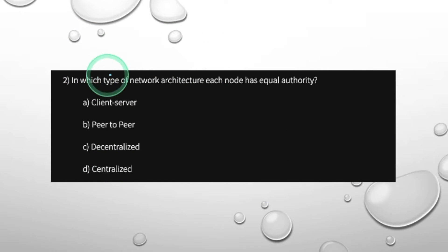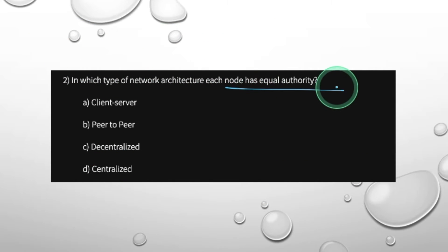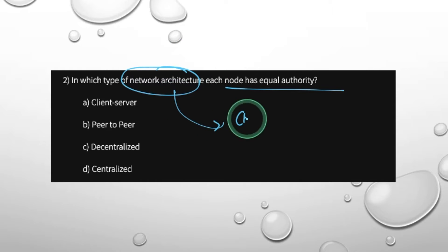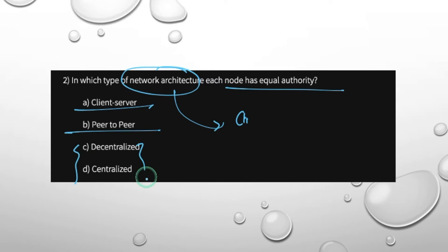In which type of network architecture do nodes not have equal authority? The types are client-server or peer-to-peer. There is also decentralized or centralized network architecture.